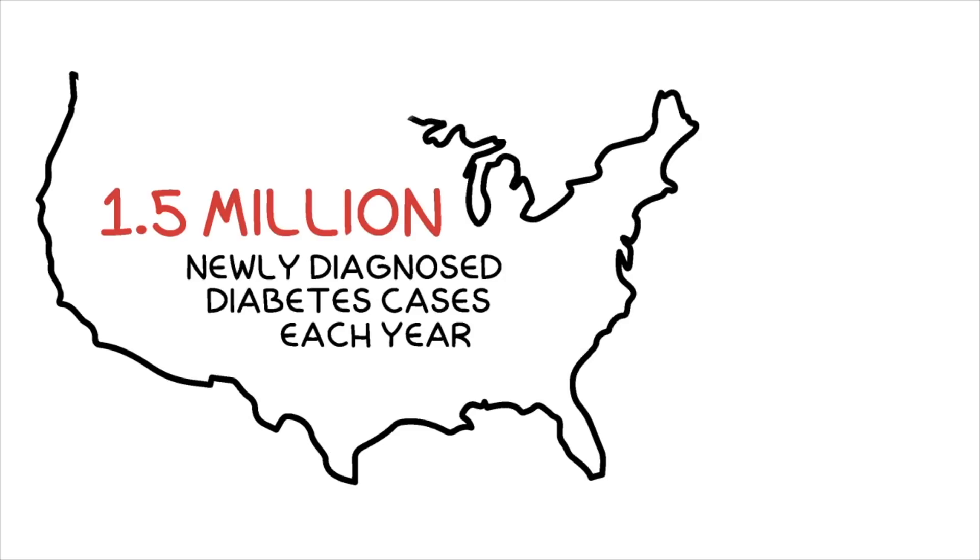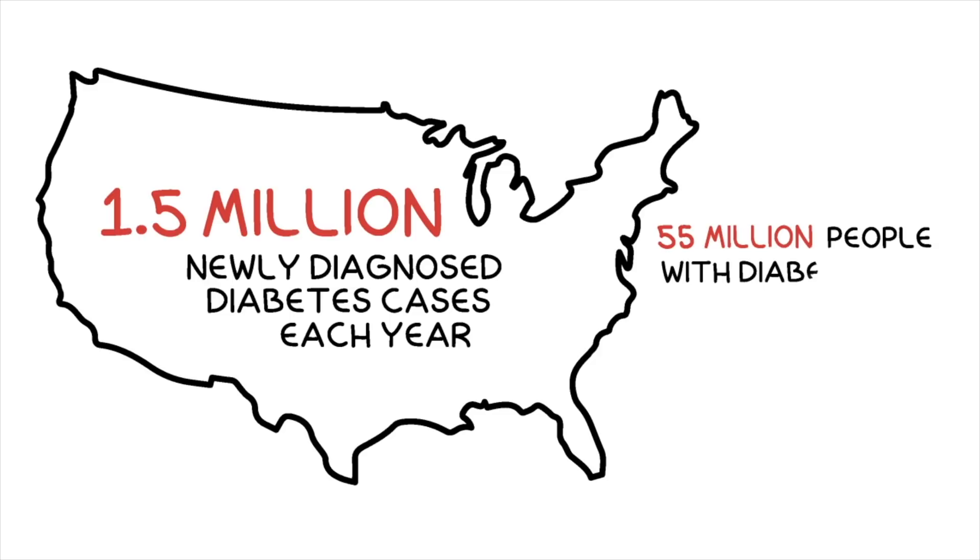According to the Center for Disease Control and Prevention, in the United States, about 1.5 million Americans are newly diagnosed with diabetes each year. The Institute for Alternative Futures has projected that by 2030, almost 55 million Americans will have diabetes, the vast majority being type 2, with the total annual medical and societal cost related to diabetes reaching $622 billion.